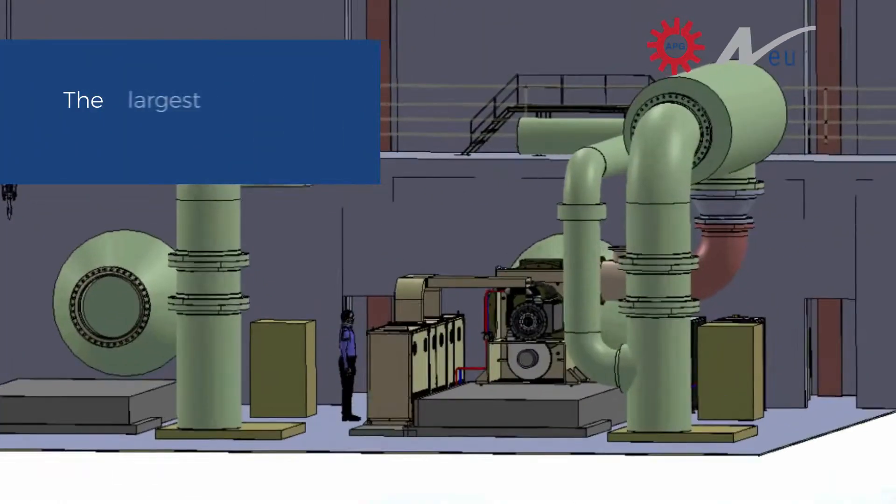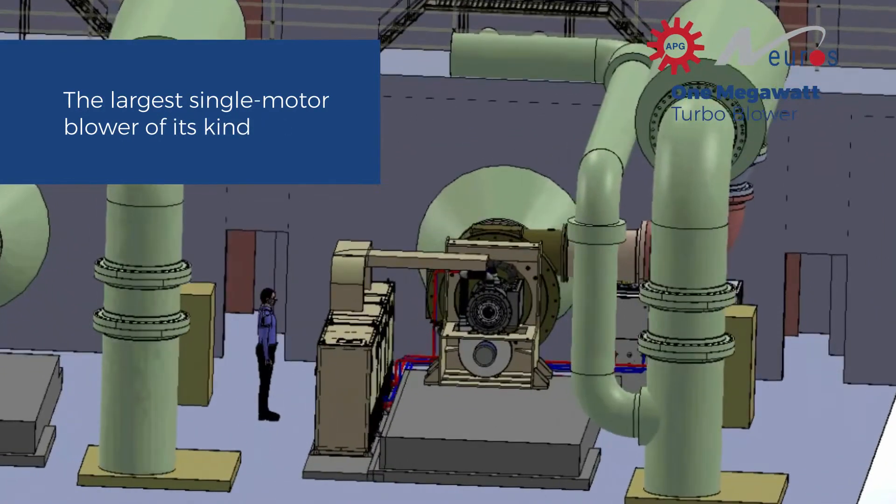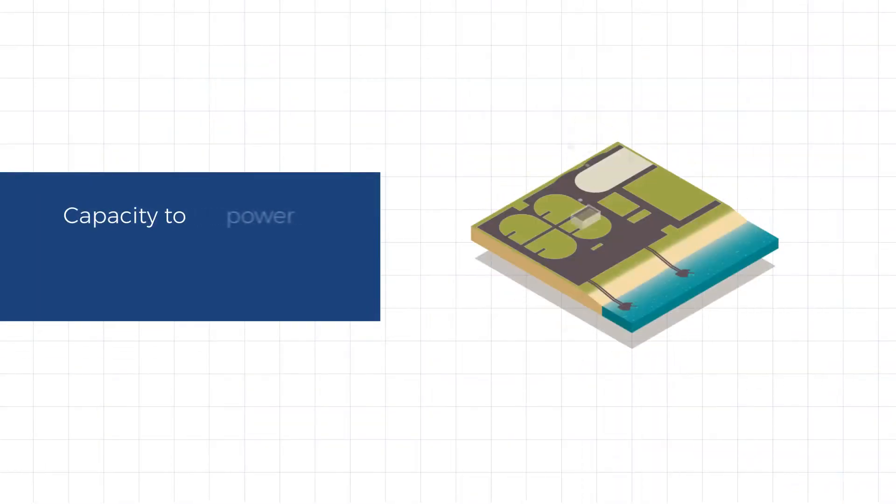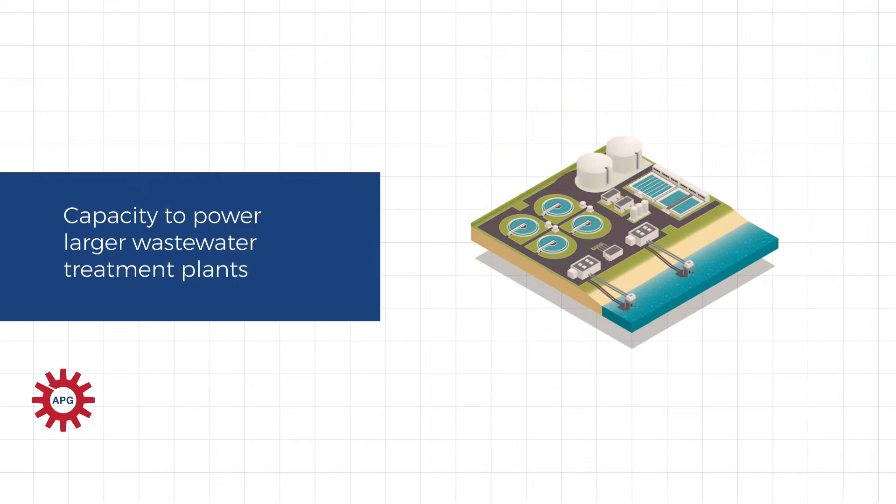APG Neuros' 1-megawatt Turbo Blower, the largest single-motor blower of its kind, has the capacity to power large wastewater treatment plants with a much smaller footprint.